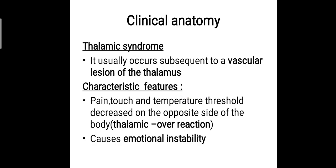The clinical anatomy includes the thalamic syndrome, usually caused by a vascular lesion of the thalamic region. It causes thalamic overreaction — pain, touch and temperature threshold is decreased on the opposite side of the body, resulting in severe pain and burning sensation on the contralateral side, as well as emotional instability. This concludes the thalamus, and further classes will deal with the other parts of the pars dorsalis. Thank you.